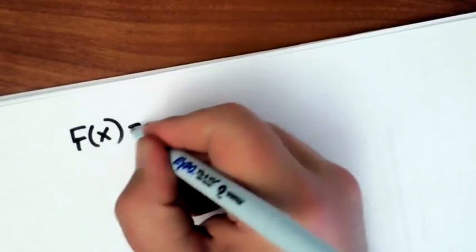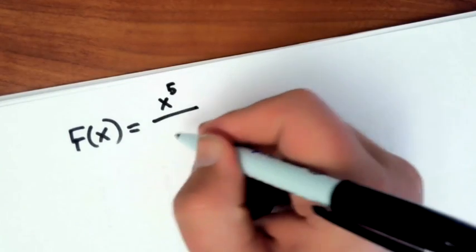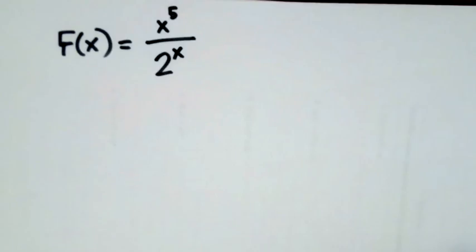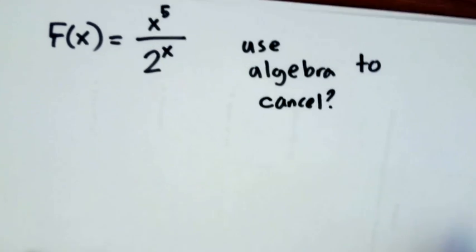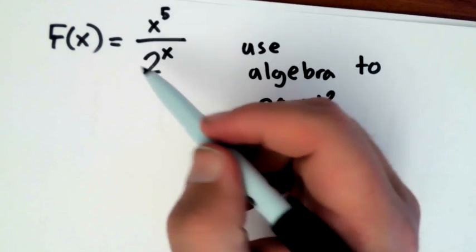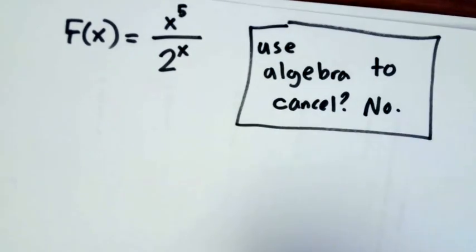So could we do one more of these? So what if we look at, we've finally gotten to F. So what if we looked at big F of x is equal to x to the fifth over 2 to the x. Now, can I use algebra to cancel here? The answer is no, because the x's are on different levels, right? So I can't do that here.